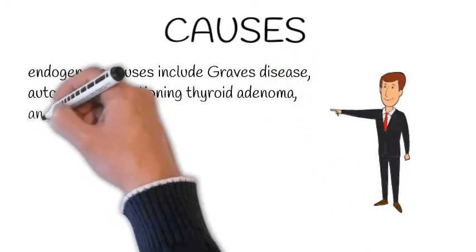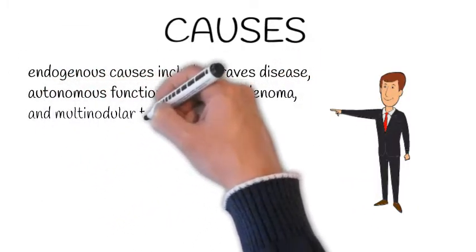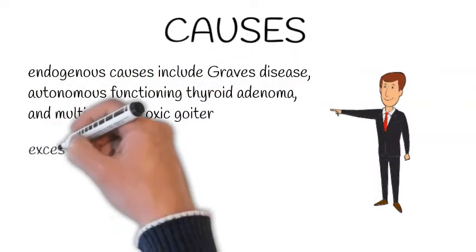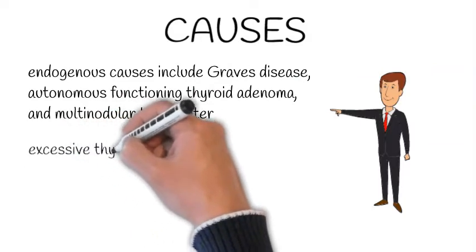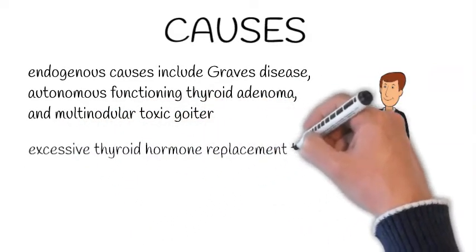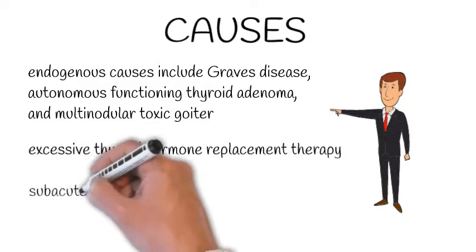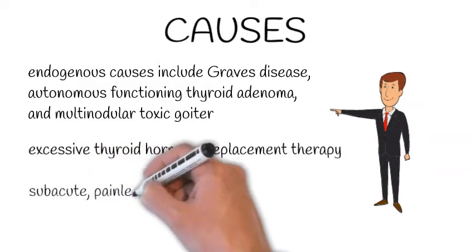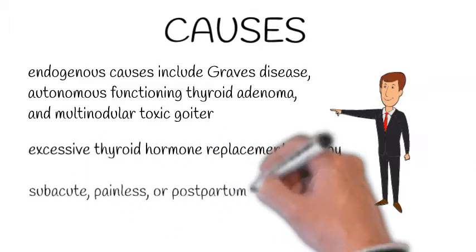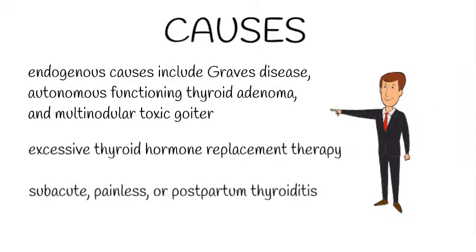Subclinical hypothyroidism may also be caused by excessive thyroid hormone replacement therapy in patients with hypothyroidism. Transient TSH suppression may occur during subacute, painless, or postpartum thyroiditis.